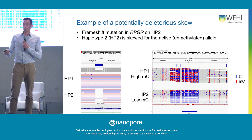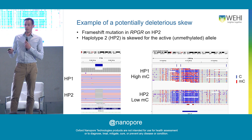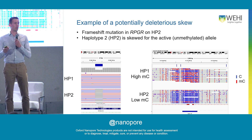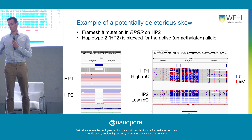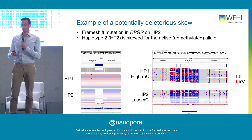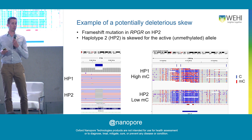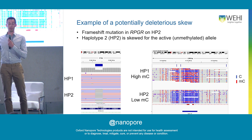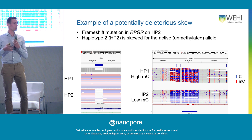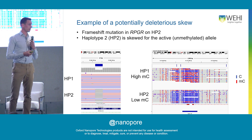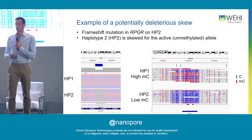In one patient, we found a frameshift mutation on haplotype 2 in a gene important for the retina. Unfortunately, haplotype 2 was the one preferentially activated in those cells, so you might predict that this contributes to the severe phenotype of this patient.